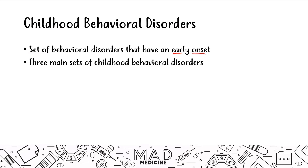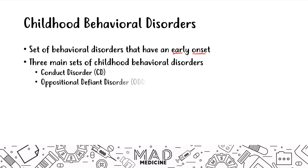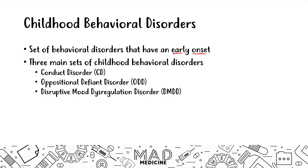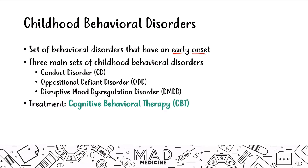Make sure you understand these three behavioral disorders pretty well. The first one is conduct disorder. The second one is oppositional defiant disorder. The third one is disruptive mood dysregulation disorder, or DMDD for short. The treatment for all of these is going to be cognitive behavioral therapy, CBT. You can give drugs — that's always an option — but the first line treatment for step one is going to be CBT, always.